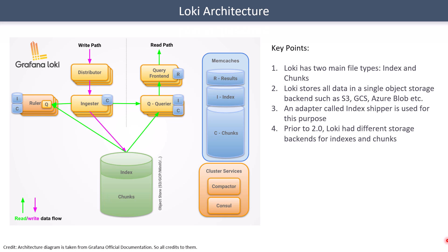Now let's have a quick look at Loki's architecture. There is a separate write path used when writing logs to Loki, and a separate read path used when querying. When a component or agent sends logs to Loki, it first connects to the Distributor, which then sends the request to an Ingester. You can have multiple Distributors receiving all requests, and multiple Ingesters. When reading logs, requests go to the Query Frontend, then to the Querier, which performs query processing and returns results to the Query Frontend, which are then shown in Grafana.